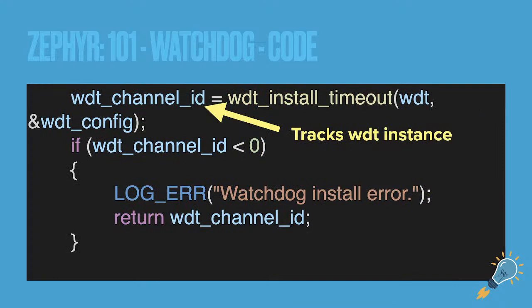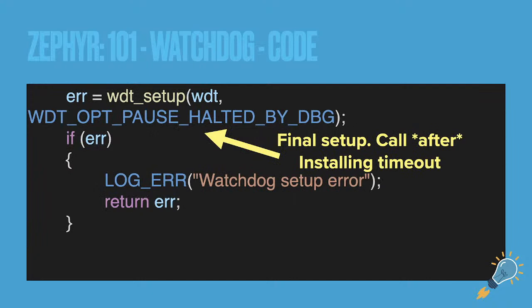After setting the configuration, you install the timeout — this is required before you start the timer itself. You also need to track the `wdt_channel_id` because there are options like pausing during debug. You can set those options if debugging, but if you want it to reset even during debug, you can remove that option.